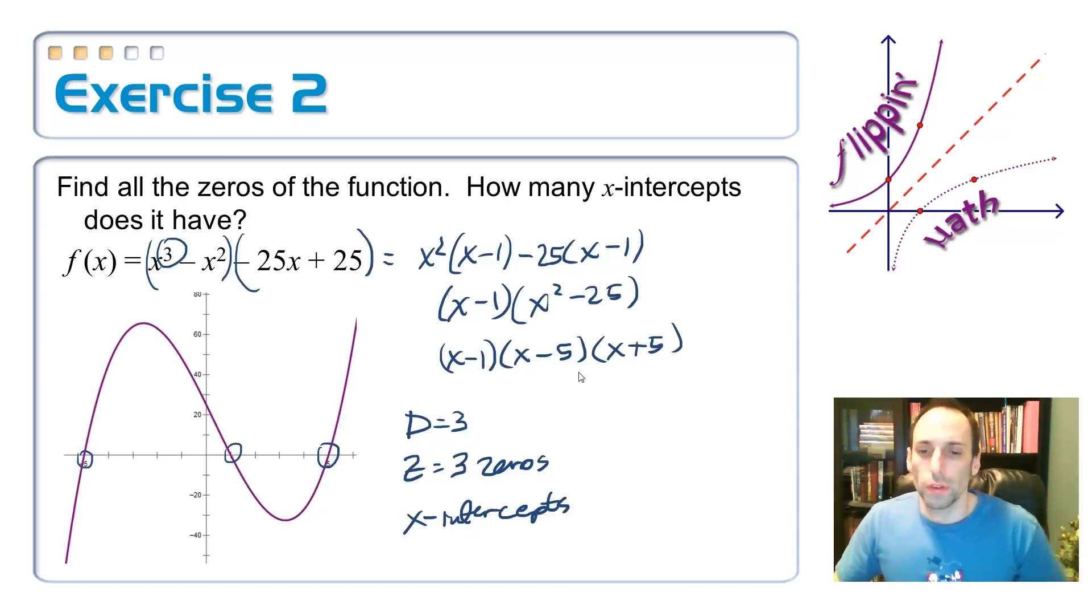So here's a question for you. Are zeros always the same thing as x-intercepts? And the answer is not always. We'll see that in the course of this lesson. When is a zero not an x-intercept? When that sucker is imaginary. So let's look at a follow-up one.